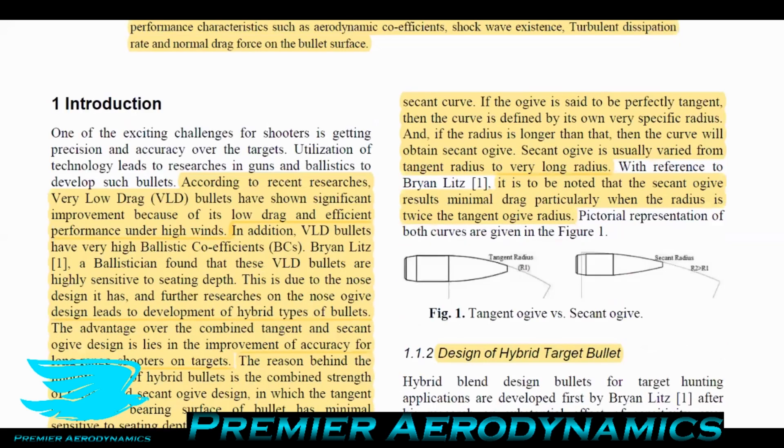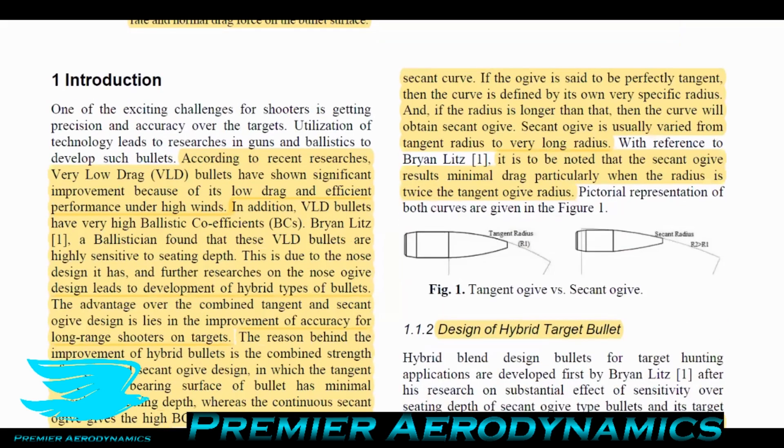In the introduction they describe bullets in general. According to recent research, very low drag bullets have shown significant improvement because of its low drag and efficient performance under high winds. In addition, very low drag bullets have very high ballistic coefficients, which is a very important number for bullets.